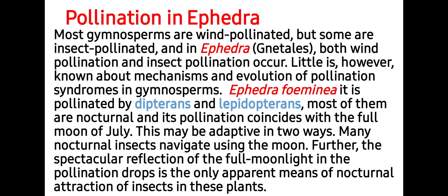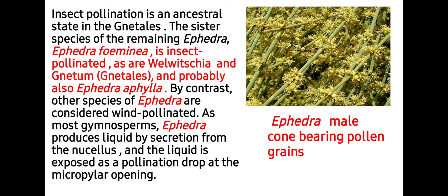The spectacular reflection of full moonlight in the pollination drop is the only apparent means of nocturnal attraction of insects in these plants. Insect pollination is an ancestral state in Gnetum — the sister species of the remaining Ephedra, that is Ephedra foeminea, is insect-pollinated, as are Welwitschia and Gnetum, and probably also Ephedra aphylla. By contrast, other species of Ephedra are considered wind-pollinated. As in most gymnosperms, Ephedra produces liquid by secretion from the nucellus.